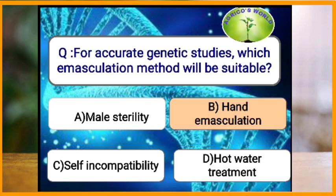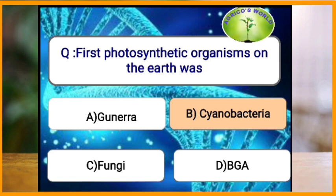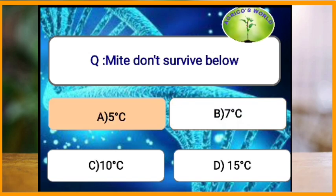For accurate genetic studies, which emasculation method is suitable? Hand emasculation method will be most useful. A subviral circular RNA component of some isometric RNA viruses is called what? It is called a virusoid.